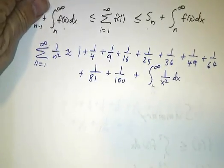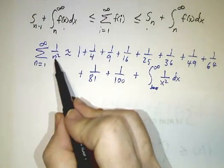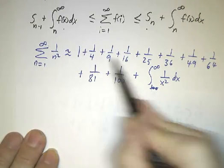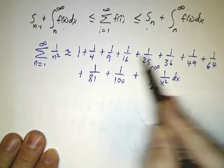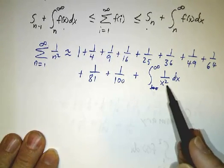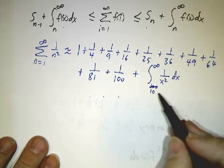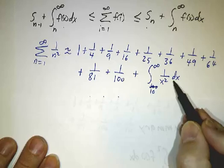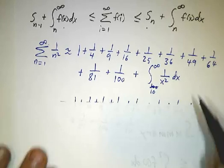If you wanted to figure out what was the sum of 1 over n squared from 1 to infinity, you could add up the first 10 terms. 1 plus 1 quarter plus 1 ninth plus 1 sixteenth up to 1 one hundredth. And then add on the integral from 10 to infinity of 1 over x squared dx. And that's a pretty easy integral. It gives you a tenth.